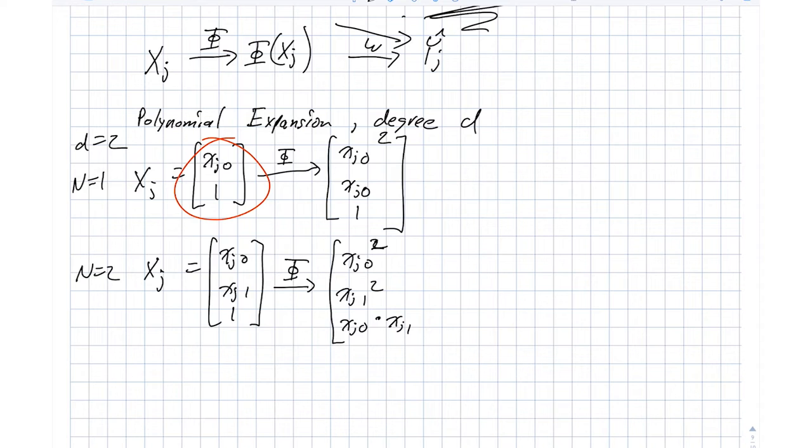And then, so those are all of our quadratic terms, and then our linear terms are xj0, xj1, and 1.